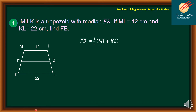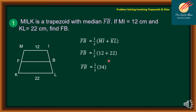Take note that the length FB is equal to one half of MI plus KL. Substituting the given values, we have one half of 12 plus 22, which gives us one half of 34. So FB is equal to 17 cm.